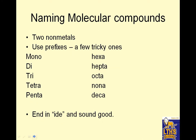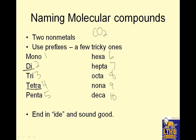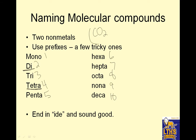Naming molecular compounds. Remember, there will always be two nonmetals, so it will be something like CO2. You use prefixes. Mono is 1. Di is 2 — be careful, it's di, not bi. Tri is 3. Tetra is 4, not quad. Penta is 5. Hex is 6. Hepta is 7. Octa is 8. Nona is 9. Deca is 10. It has to end in -ide and sound good. So carbon and oxygen are two nonmetals, so this would be carbon dioxide — I didn't use mono for the first one.